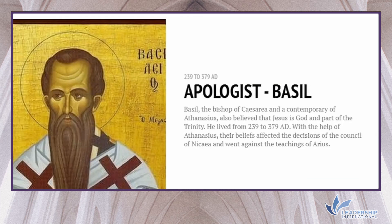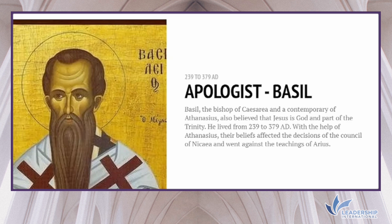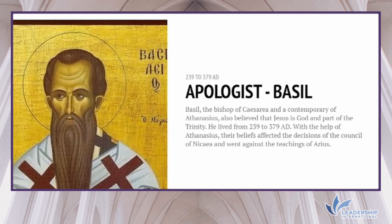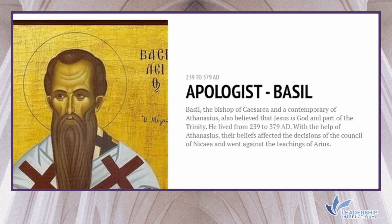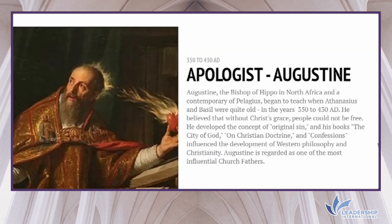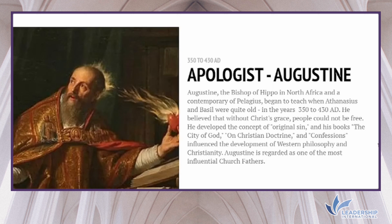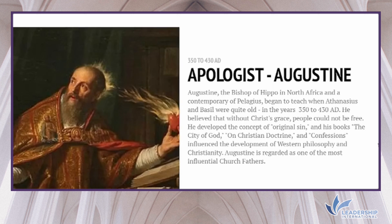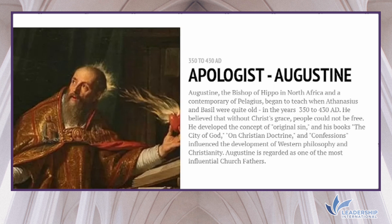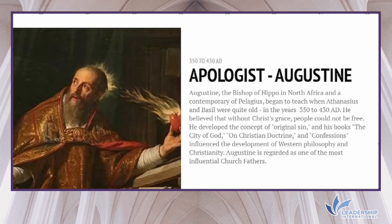Basil, the Bishop of Caesarea and contemporary of Athanasius, also believed that Jesus is God and part of the Trinity. He lived from 329 to 379 AD. With the help of Athanasius, their beliefs affected the decisions of the Council of Nicaea and went against the teachings of Arius. Augustine, the Bishop of Hippo in North Africa and contemporary of Pelagius, lived from 350 to 430 AD. He believed that without Christ's grace people could not be free, developed the concept of original sin, and his books — The City of God, On Christian Doctrine, and Confessions — influenced the development of philosophy and Christianity. Augustine is regarded as one of the most influential church fathers.